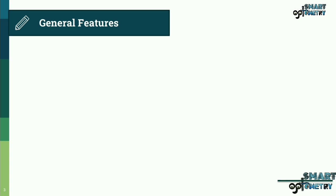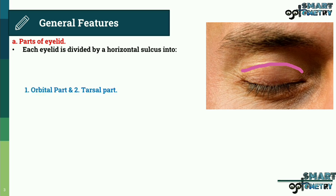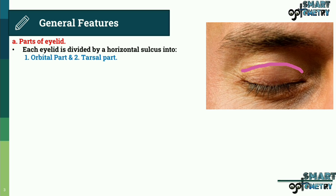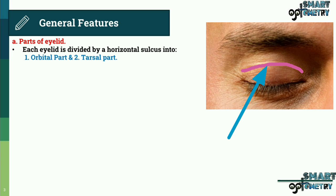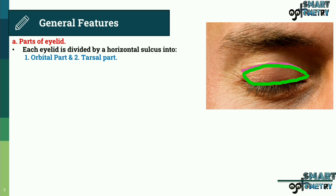Now the general features of the eyelid — parts of the eyelid. Each eyelid is divided by a horizontal sulcus into: one, the orbital part; and two, the tarsal part. In this figure we can see the horizontal sulcus, the orbital part, and the tarsal part.